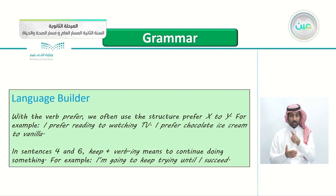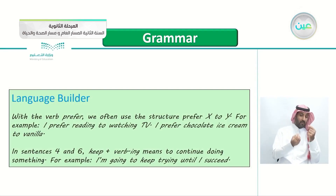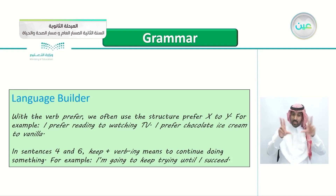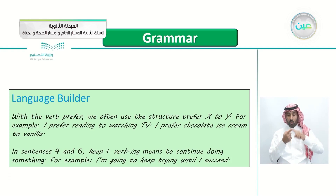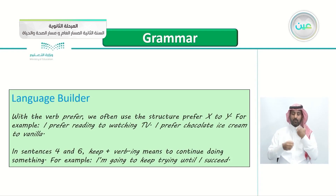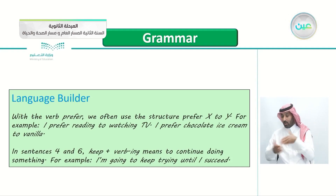Language builder: with the verb prefer, we often use the structure 'prefer X to Y.' For example: 'I prefer reading to watching TV' or 'I prefer chocolate ice cream to vanilla.' Also, keep plus verb-ing means to continue doing something — for example: 'I'm going to keep trying until I succeed' means continue to try.